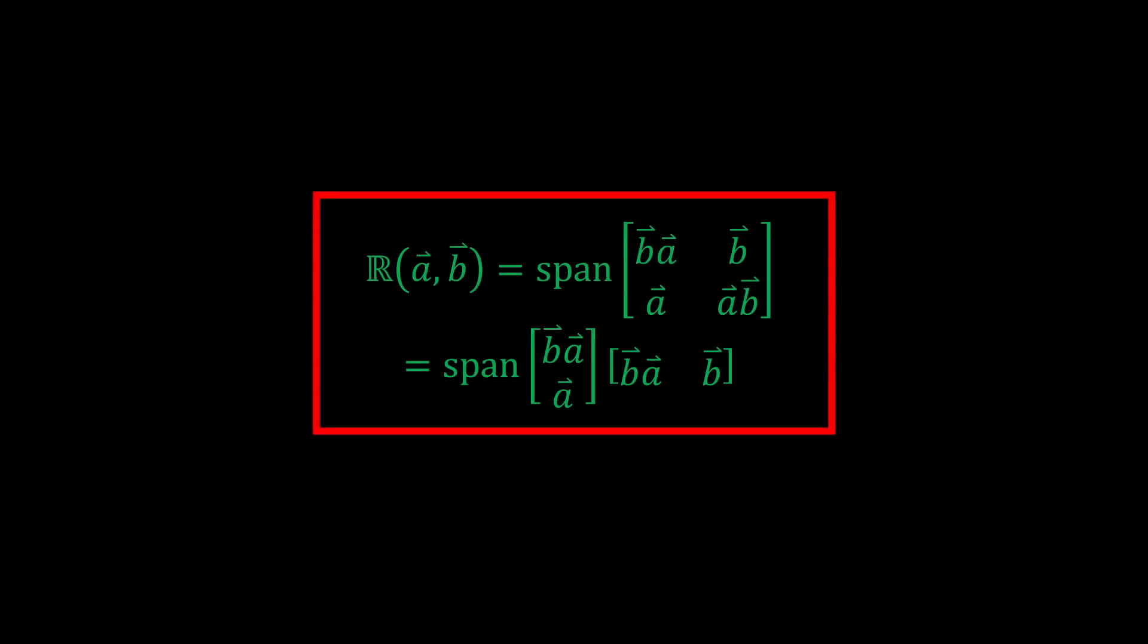This extended system is defined by the span of the canonical nilpotent matrix. Note the row and column decomposition. This will be used in a moment to define numbers in this new system.